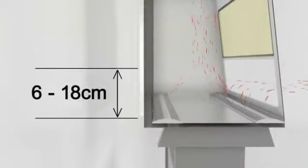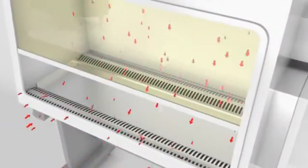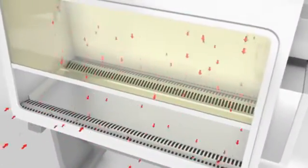This downward flow splits about 6 to 18 centimetres from the work surface. One half of the air passing through the front exhaust grill and the other half passing through the rear exhaust grill.